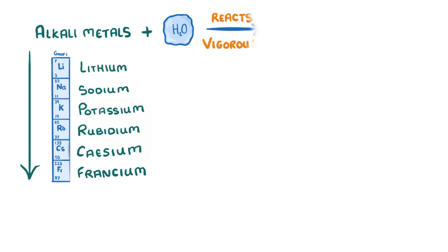When an alkali metal is put in water, it reacts vigorously to produce a metal hydroxide and hydrogen gas. For example, sodium plus water will form sodium hydroxide plus hydrogen.